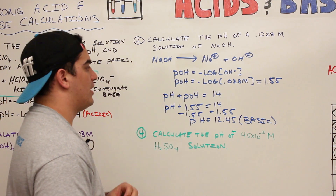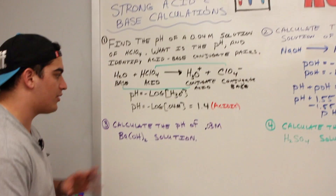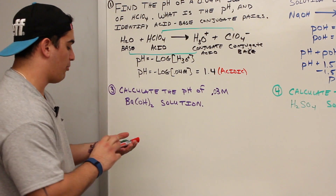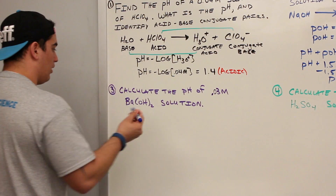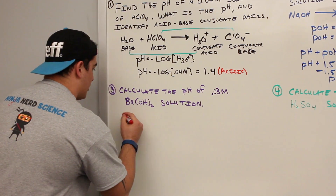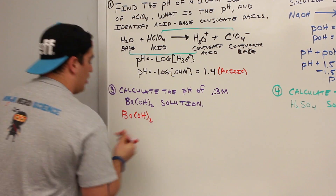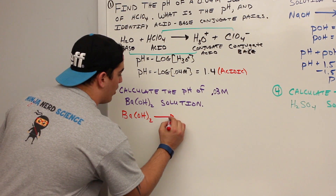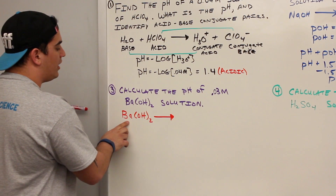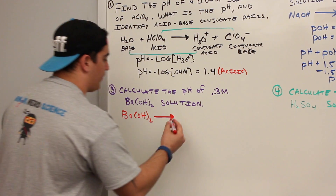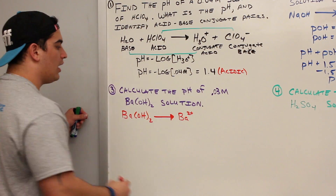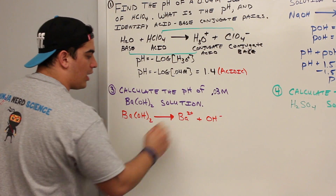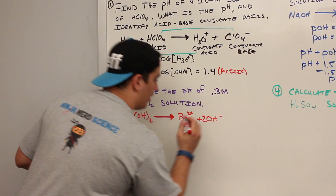Now let's do a slightly more involved problem. We're going to use barium hydroxide, Ba(OH)₂ — and that subscript 2 is very important. Barium hydroxide is a strong base, so all of it completely dissociates into hydroxide ions. You get Ba²⁺ and hydroxide, but here's the key: there are two hydroxides in Ba(OH)₂ but only one hydroxide on the product side, so we must put a coefficient of 2 in front of the hydroxide.